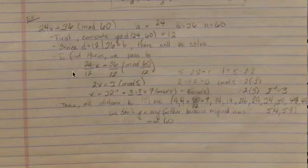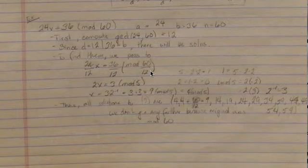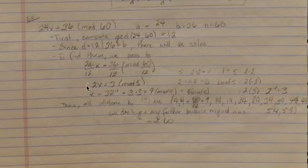The algorithm used to solve this starts with dividing each of them by the greatest common divisor in order to simplify, so in this case it goes from this to 2x equals 3 mod 5.